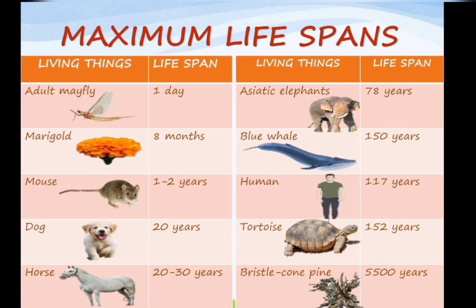Here are some maximum life spans of different animals and living things. The adult mayfly can live for a maximum of one day, while the flower marigold can live for 8 months. A mouse can live for 1 to 2 years, a dog for a maximum of 20 years, a horse for 20 to 30 years. The Asian elephant can live for a maximum of 78 years, and the blue whale can live for a maximum of 150 years.